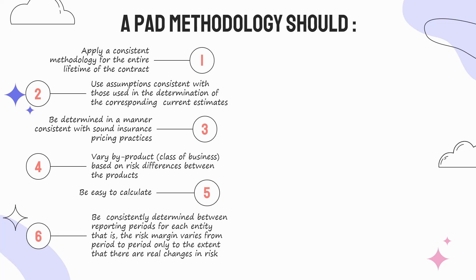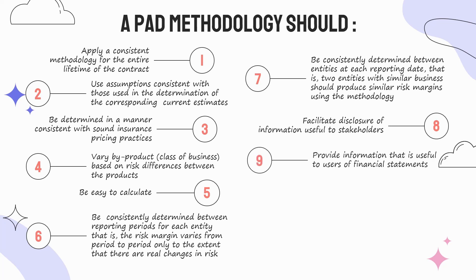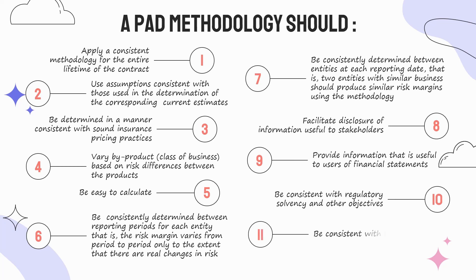Five, be easy to calculate. Six, be consistently determined between reporting periods for each entity — that is, the risk margin varies from period to period only to the extent that there are real changes in risk. Seven, be consistently determined between entities at each reporting date — that is, two entities with similar business should produce similar risk margins. Eight, facilitate disclosure of information useful to stakeholders. Nine, provide information that is useful to users of financial statements.